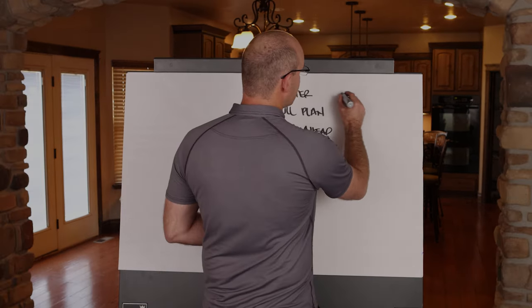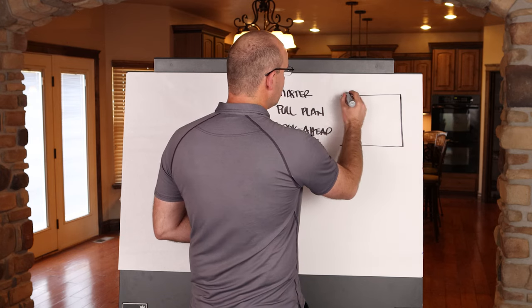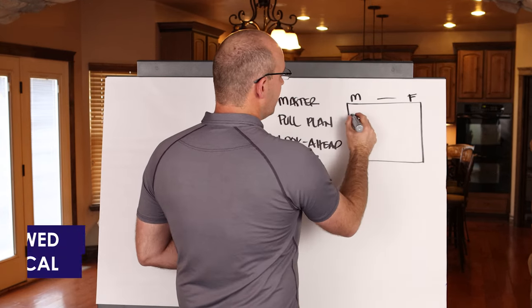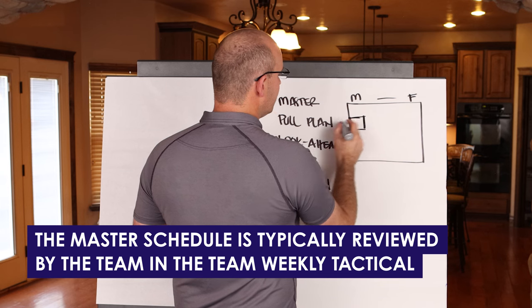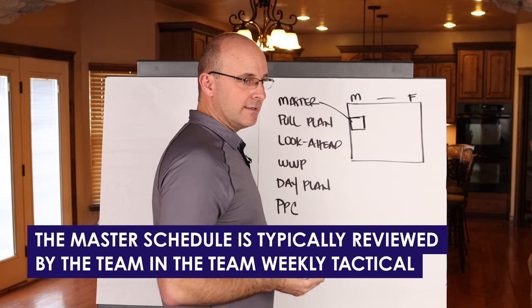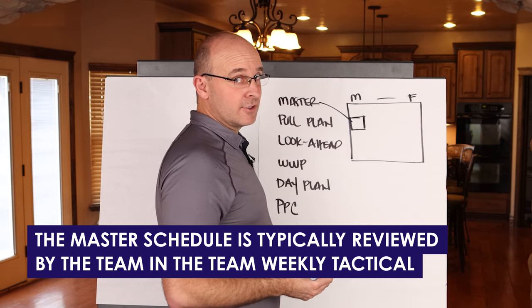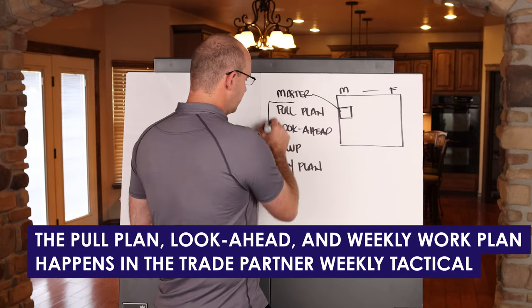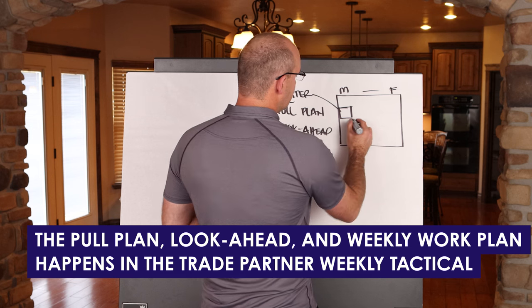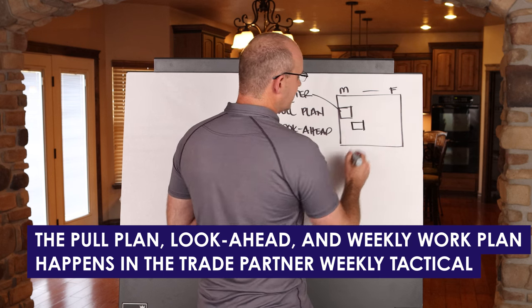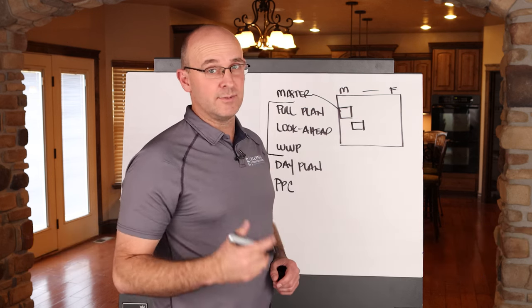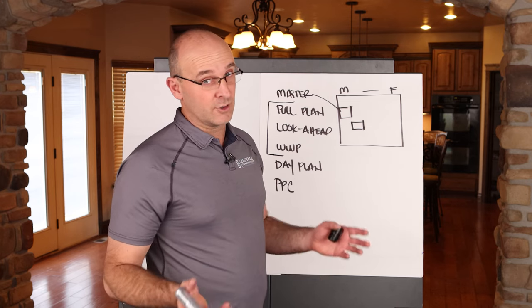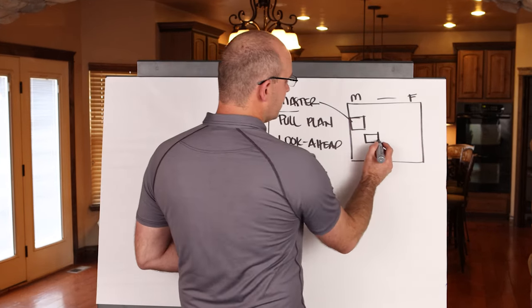This happens in a meeting structure. In a Monday through Friday, the master schedule is typically reviewed by the team in the team weekly tactical or your strategic planning and procurement meeting. Your pull plan and your look-ahead and weekly work plan happen in what I call the trade partner weekly tactical. Some people call it your trade meeting, your sub-meeting, or your Last Planner meeting, or your weekly work planning meeting. This is a longer one, typically about 90 minutes.